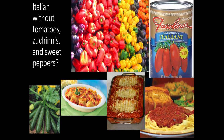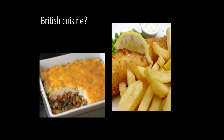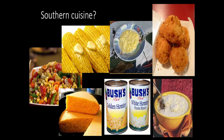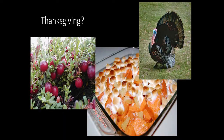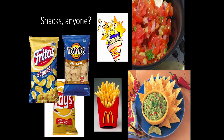Just as one example: what would Italian national cuisine be without tomatoes, zucchinis, and sweet peppers? A pile of pasta with a little garlic and onions on the side. The rest is a contribution of Native farmers. British cuisine would be hard to imagine without the Native American potato in shepherd's pie and the steak fries of fish and chips. Southern cuisine would lack maize, a Native domesticate that became the mainstay of tables in the South. And Thanksgiving is hard to envision without turkey, cranberry sauce, and sweet potatoes — all Native foods.